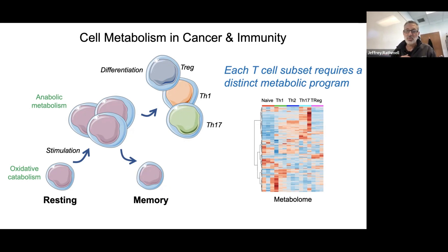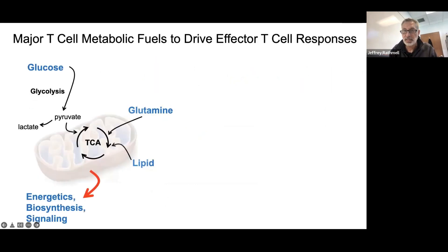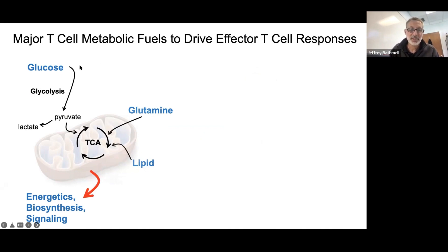We've been interested in why those metabolic differences arise and why they're important — and ultimately, whether aspects of these pathways can be selectively modulated to tune an immune response. This could be useful in inflammatory disease settings or in cancer, where you'd want to understand how the tissue microenvironment has selective effects on different cell subpopulations, or to promote a Th1 or CD8 cytotoxic response. The key metabolic fuels are glucose, glutamine, and various lipids, all funneling into the TCA cycle.